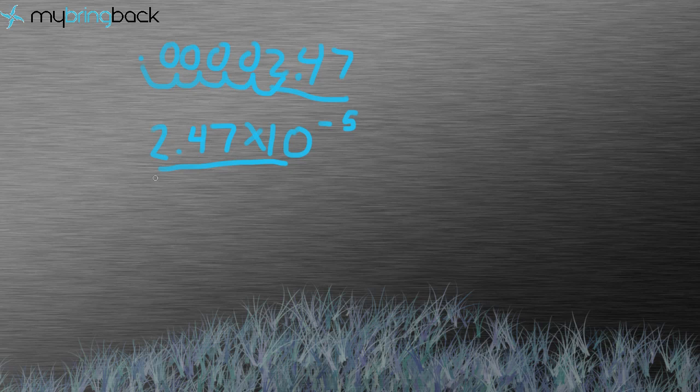And the nice thing about scientific notation is when we were talking about significant figures, we can tell how many significant figures there is already just by looking at this right here. As you can see, we have 3 significant figures, 2.47.